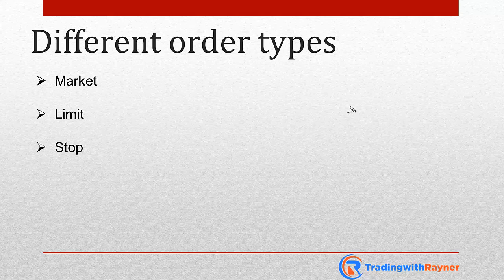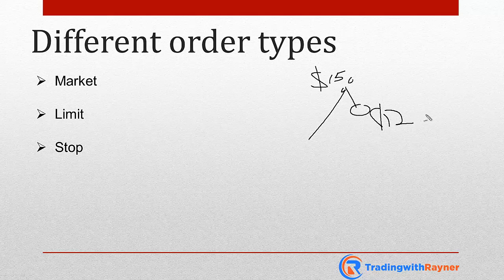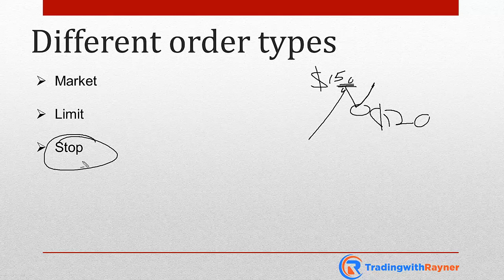The last one is a stop order. A stop order means you will only buy a stock if price reaches a certain level. This is usually used by breakout traders. For example, if the high is around $150 and price retraces to about $120, a breakout trader would place a buy stop above $150. If price trades up to $151, the buy stop order gets triggered and you go long.